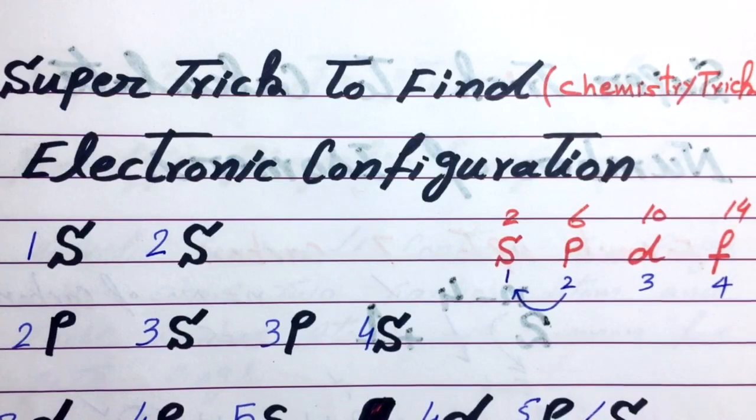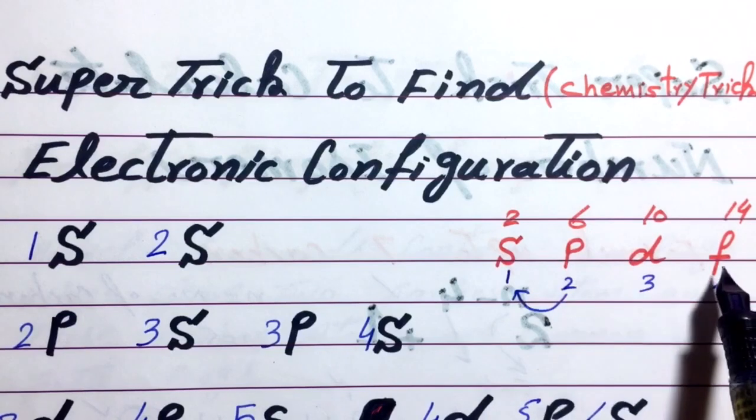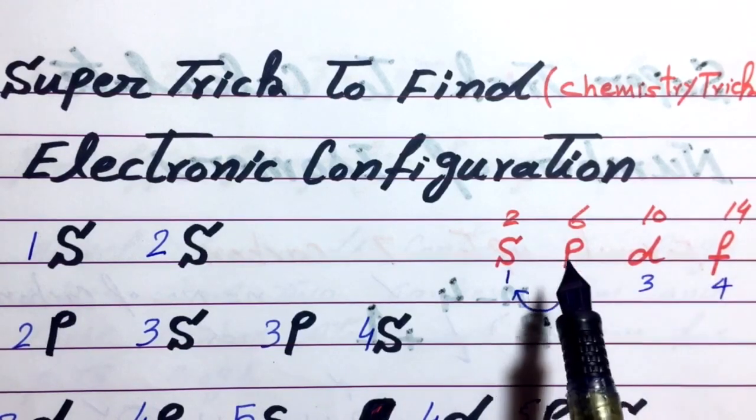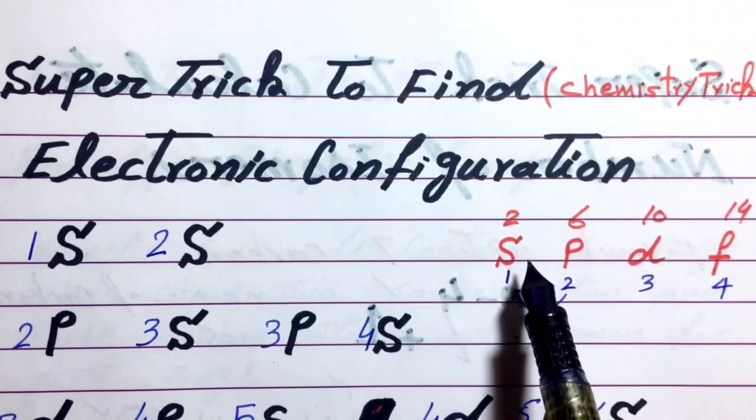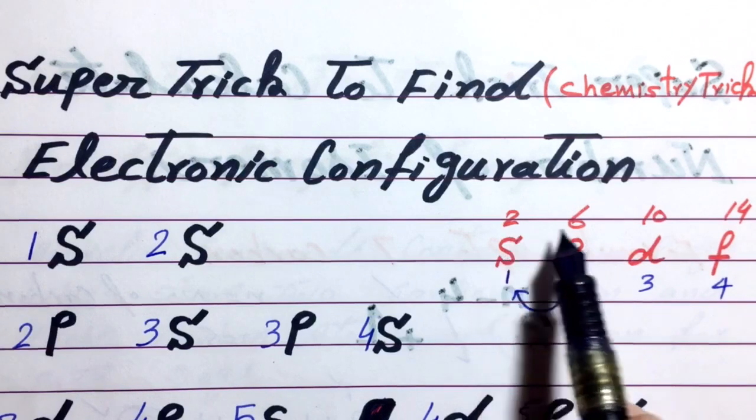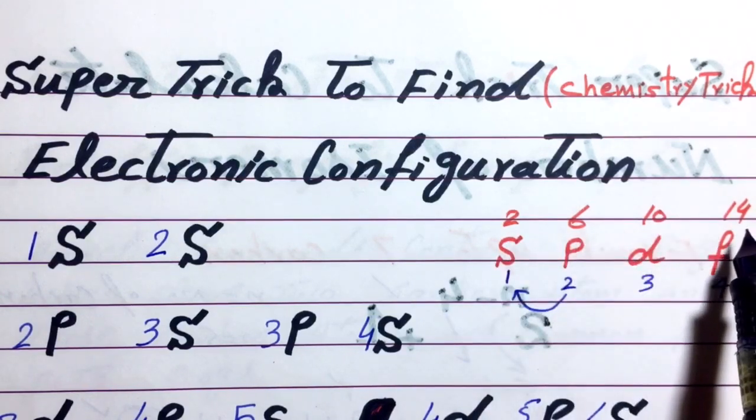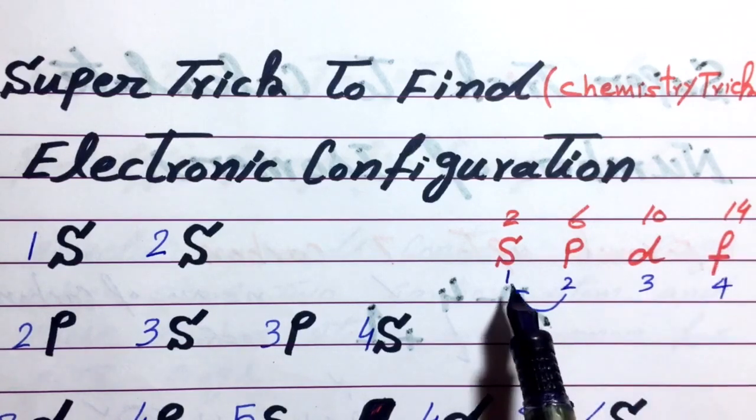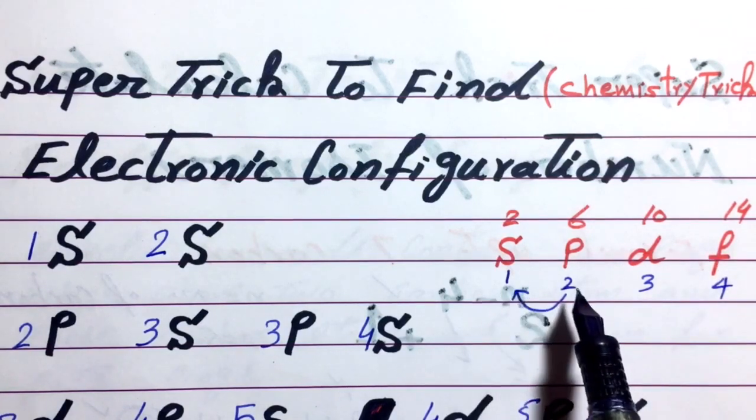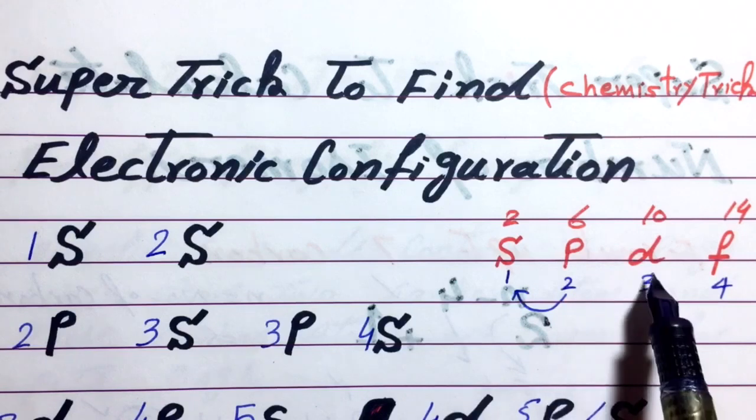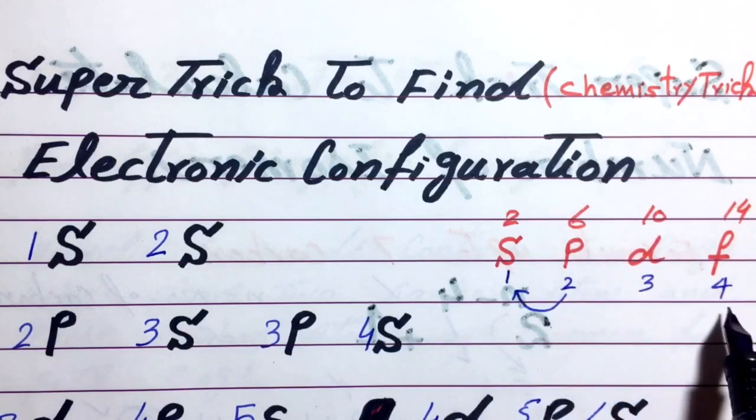First of all write all subshells S, P, D and F and memorize that the number of electrons filled in S subshell will be 2, in P 6, in D 10 and similarly F 14. And start numbering of S from 1 and numbering of P from 2, numbering of D from 3 and numbering of F from 4.